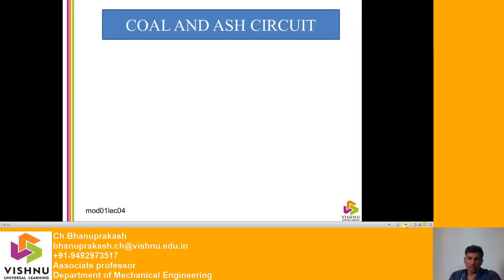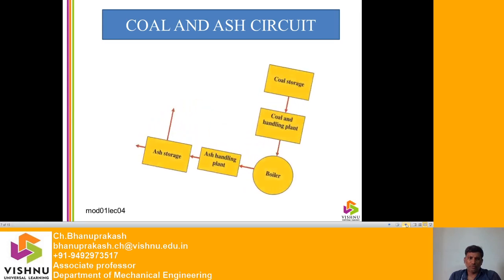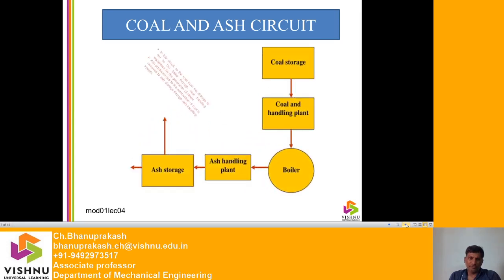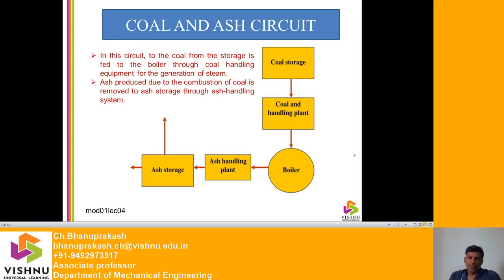Coal and ash circuit. In this circuit, the coal from the coal storage is fed to the boiler with the help of coal handling equipment. After feeding the coal into the boiler, combustion is done. The by-product is ash. Ash produced due to combustion of coal is removed to ash storage through the ash handling system. That is all about the coal and ash circuit.